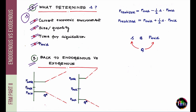Now let's differentiate between endogenous and exogenous. We have plotted P_ask and P_mid as a function of trade size or quantity Q, for two different assets: a liquid asset and an illiquid asset.